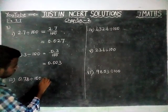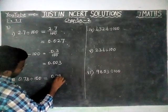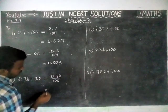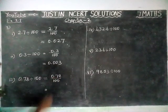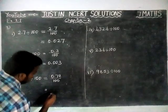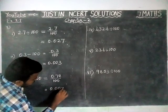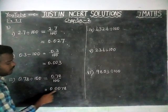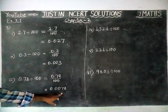Third question: 0.78 divided by 100. Here already we have two decimal places, and we are going to add another two decimal places. We have to add zeros for the extra decimal places. So the answer is 0.0078.